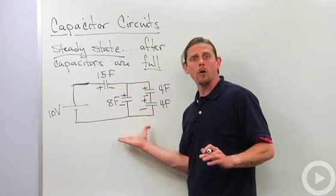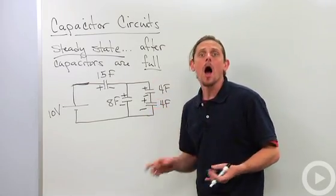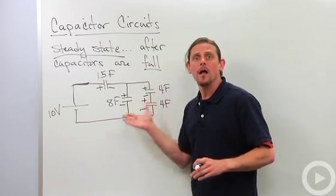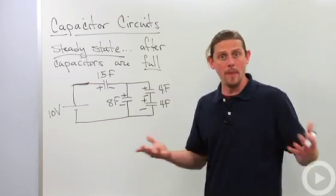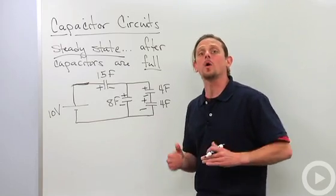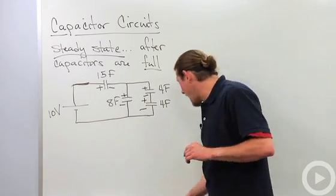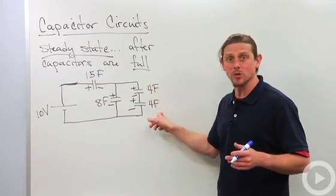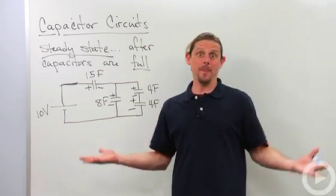We look at our network and we say how can I combine these capacitors either in series or in parallel to make it a simple circuit that consists only of a battery and a single effective capacitor. And then what we do is we reconstruct the circuit, the original circuit, just by going back through our analysis. So let's go ahead and do this. The first thing, it's obvious, these two four-farad capacitors are connected in series.